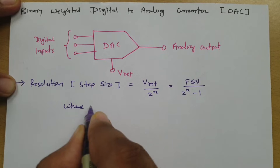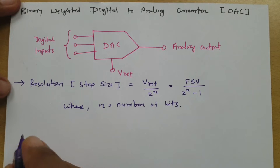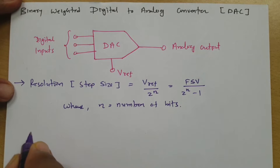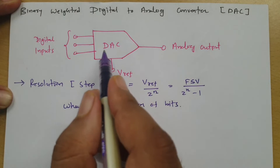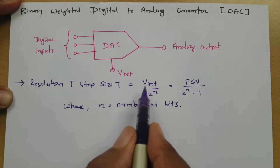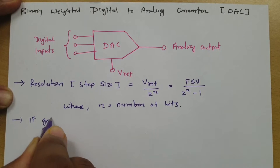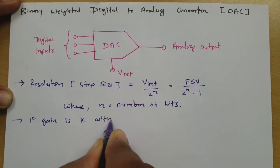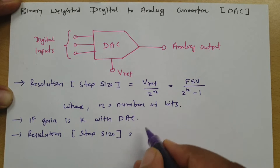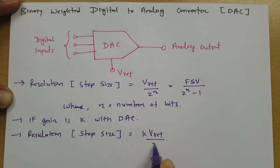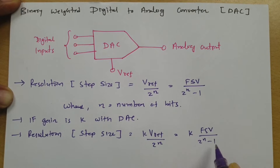Here, n is the number of bits and FSV is the full scale voltage. Sometimes a digital-to-analog converter has a gain K. If the DAC has gain K, then K must be multiplied with the data to get the exact resolution or step size. So if gain is K, then resolution equals K multiplied by V_reference divided by 2 to the power n, or K multiplied by full scale voltage divided by 2 to the power n minus 1.